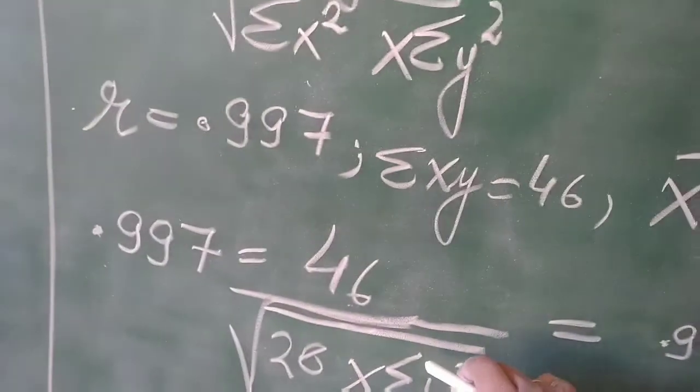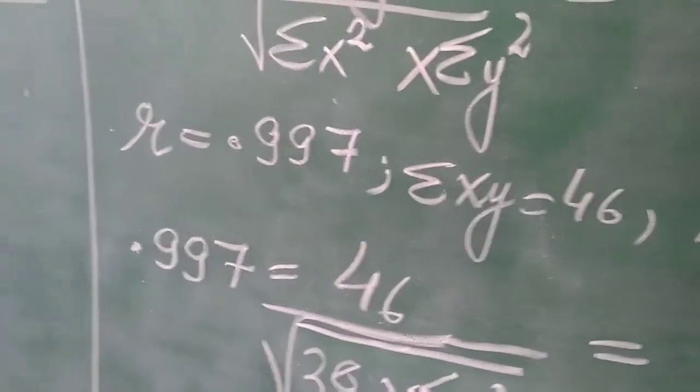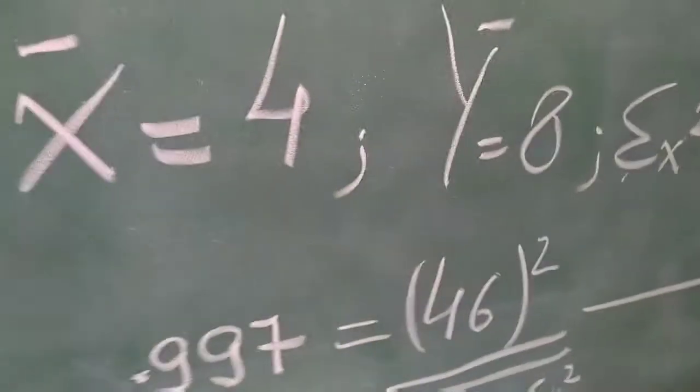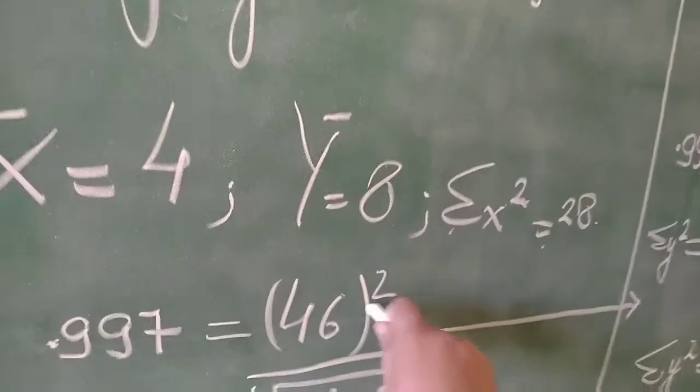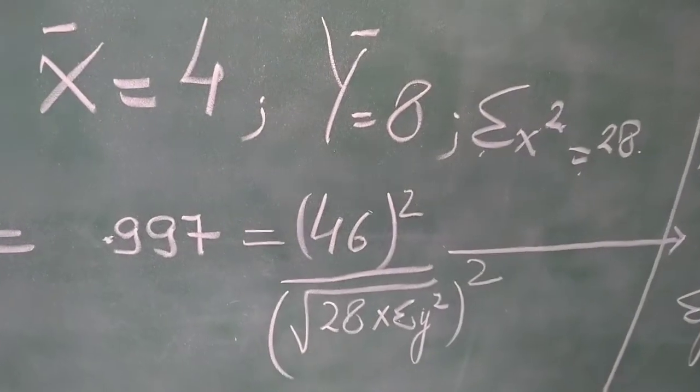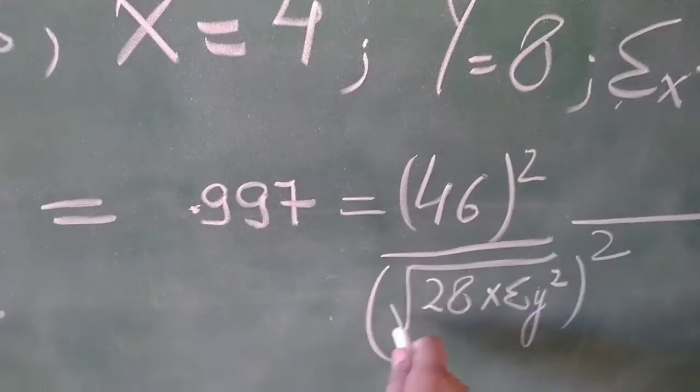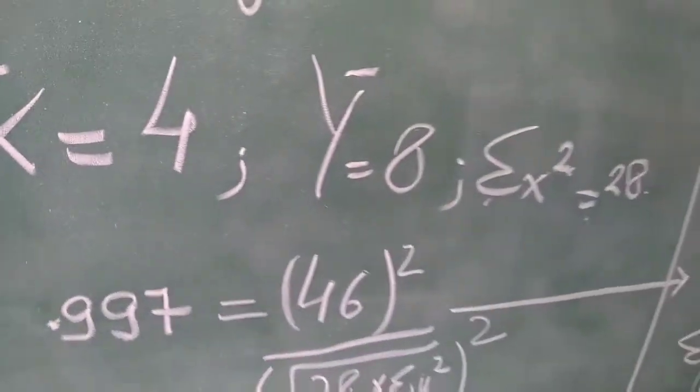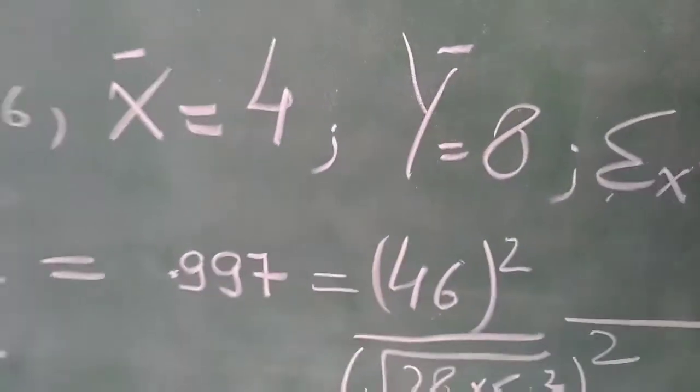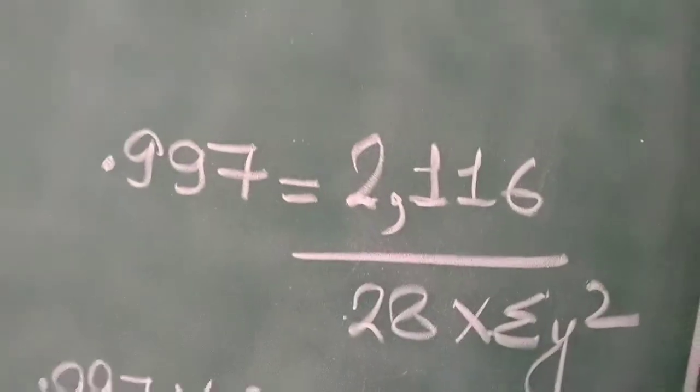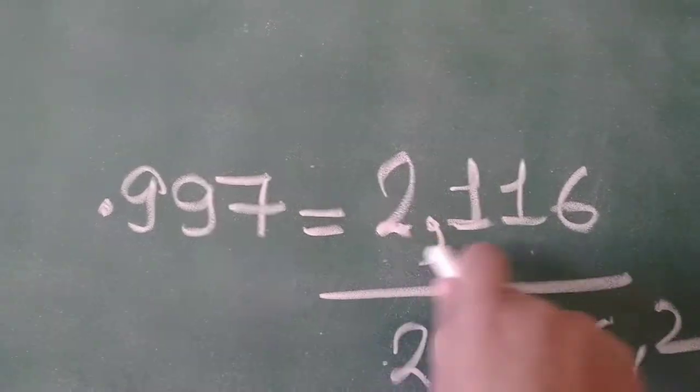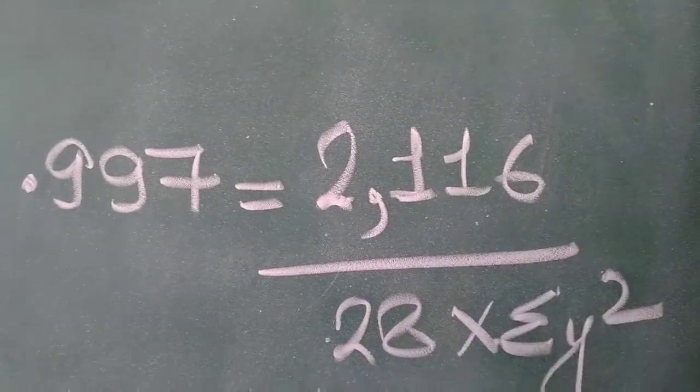We will remove this under root so that when we take it here we will take easy calculation. Under root can be removed by squaring up denominator and numerator, then we will cross multiply. In the next solution, we have square root removed and 46 is squared, so 2116 is the answer for 46 square.